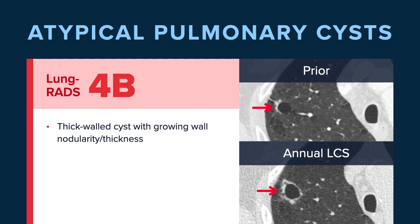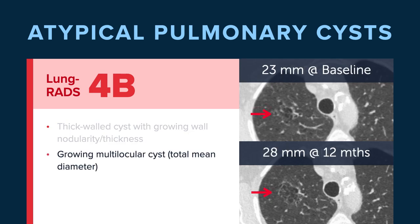IV-B is reserved for thick-walled cysts that demonstrate growing wall nodularity or thickness. As we see in this example, we have a prior thick-walled cyst — it would have been a Lung RADS IV-A — but over time the wall thickness has increased, there's more nodularity, and it is now a Lung RADS IV-B. Growing multilocular cysts: even if they don't develop a solid component, just an overall increase in the size of a multilocular cyst will warrant a IV-B classification.